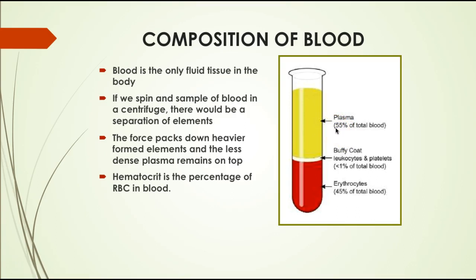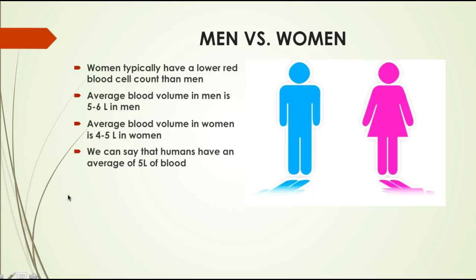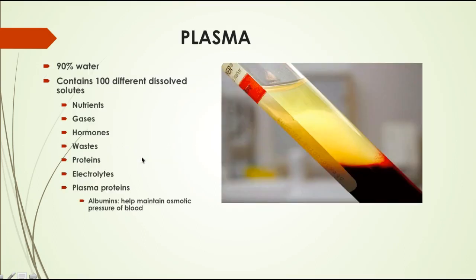Above the buffy coat is the fluid portion of the blood called plasma, which is approximately 55% of total blood volume. Keep in mind that blood is a tissue — it is a connective tissue in the human body and the only one that is fluid. Women typically have a lower red blood cell count than men. On average, men have five to six liters of blood and women have four to five liters, so humans have on average about five liters of blood.